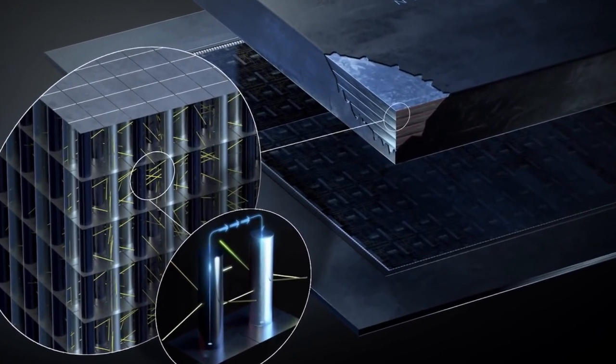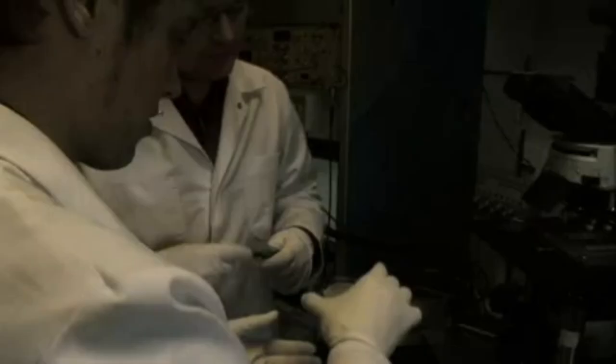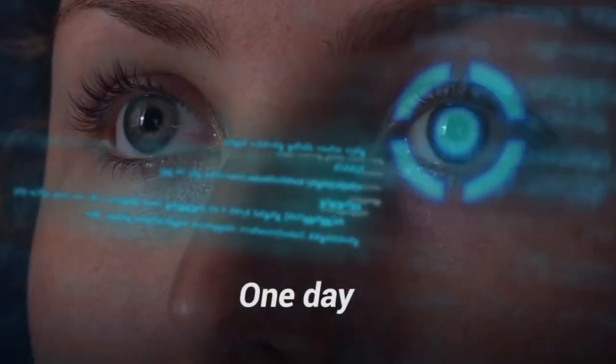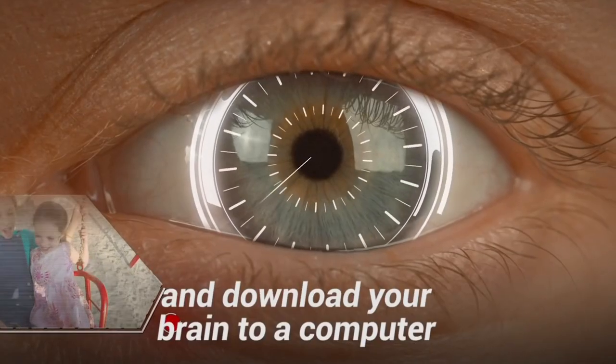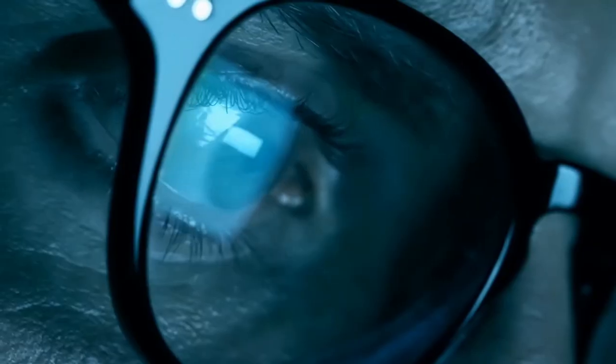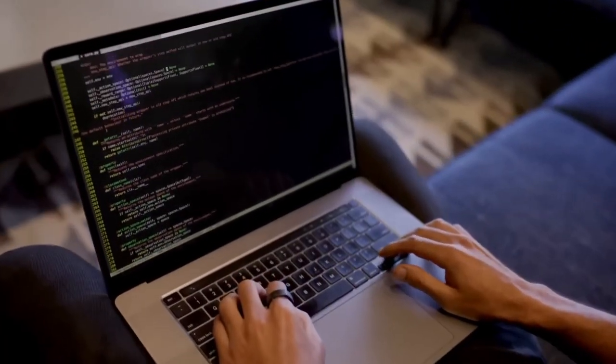The structure of an artificial neuron on a silicon chip consists of three key components: input, processing unit, and output. The input receives signals, the processing unit performs calculations based on these signals, and the output sends processed information to other neurons or output devices.